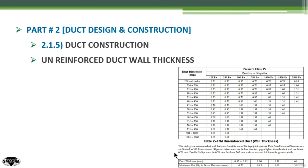This means the table gives the minimum duct sheet metal thickness, and that the joints and seams should be two gauges thicker than the duct wall. A smaller sub-table below compares the duct sheet metal thickness against the minimum flat slip and drive thickness, giving an equivalent thickness for the joint and seam of the duct.